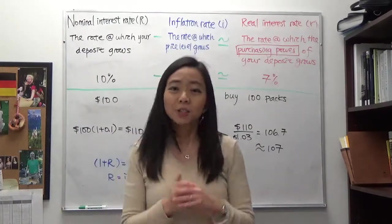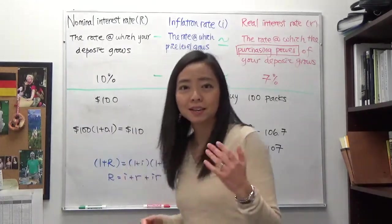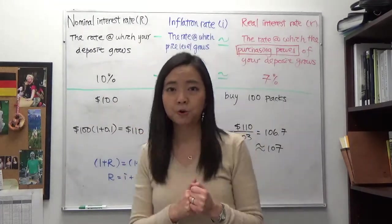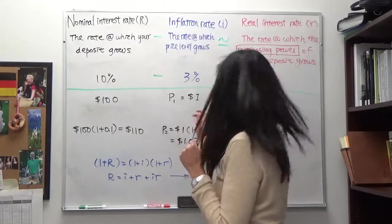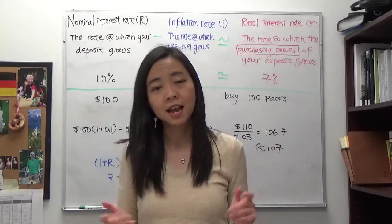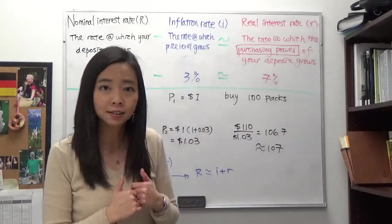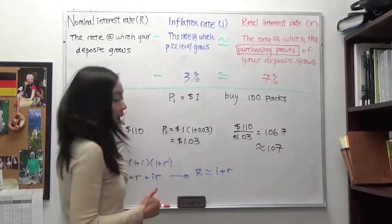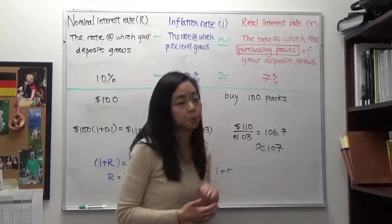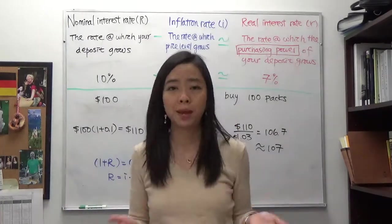So we're going to illustrate with a very simple example. Suppose you have a hundred bucks and the price of a pack of chalks is a dollar this year. So if you don't make a deposit and you go ahead and purchase some chalks, how many packs can you purchase? There will be a hundred divided by one and you will be able to buy a hundred packs of chalks.